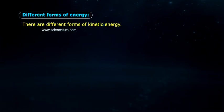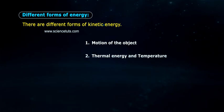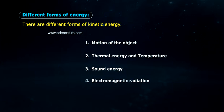Different forms of energy. There are different forms of kinetic energy: 1. Motion of the object, 2. Thermal energy and temperature, 3. Sound energy, 4. Electromagnetic radiation, 5. Electric energy.